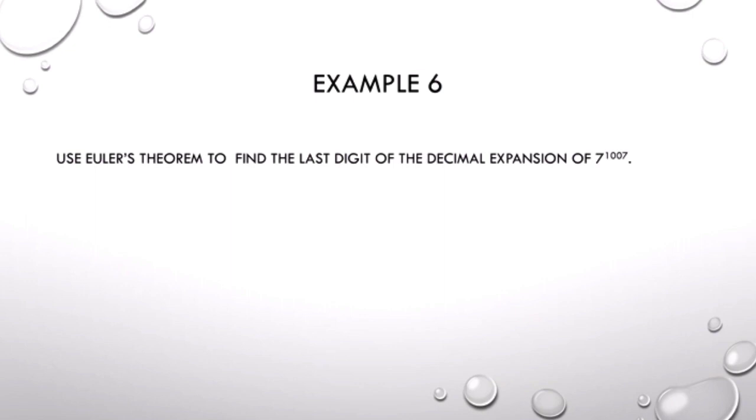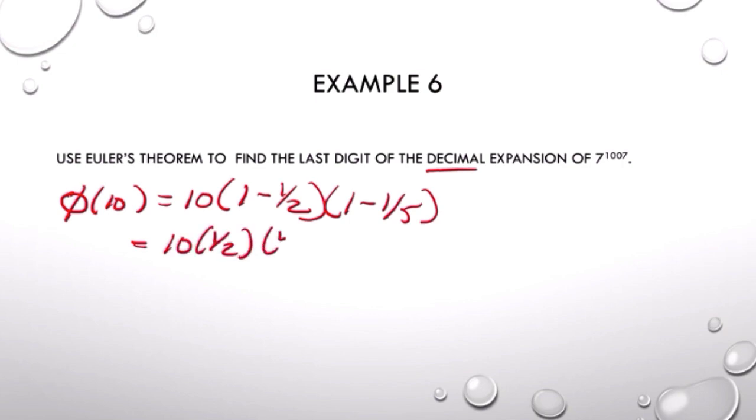Example 6. Now we want to find the last digit of the decimal expansion of 7 to the 1007. So this is really saying what's the remainder when you divide by 10. Decimal numbers are base 10. So we find phi of 10, which is 4. And we know that 7 to the 4th power is going to be congruent to 1 mod 10 then.